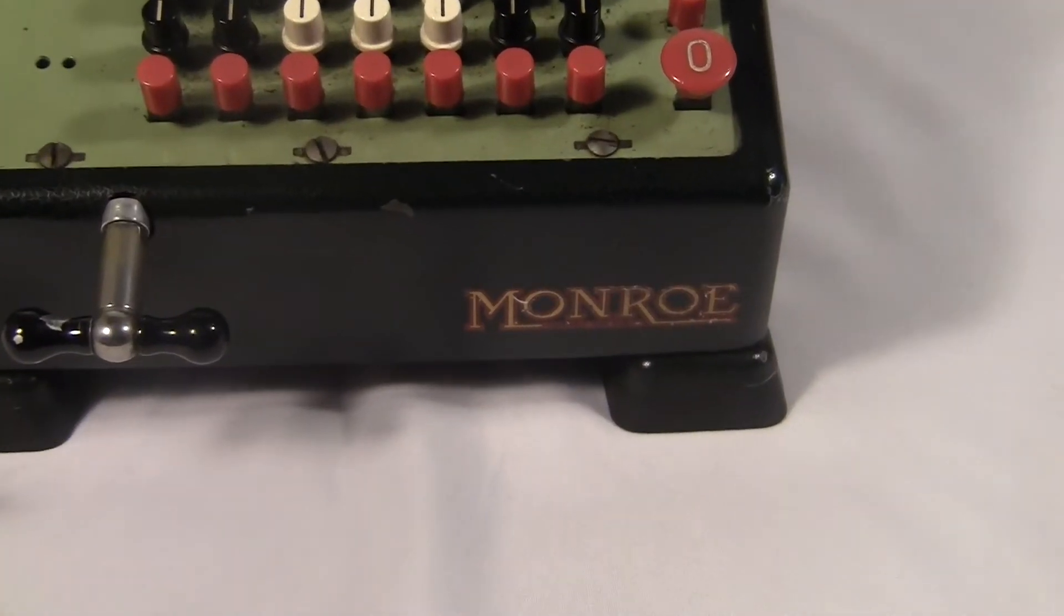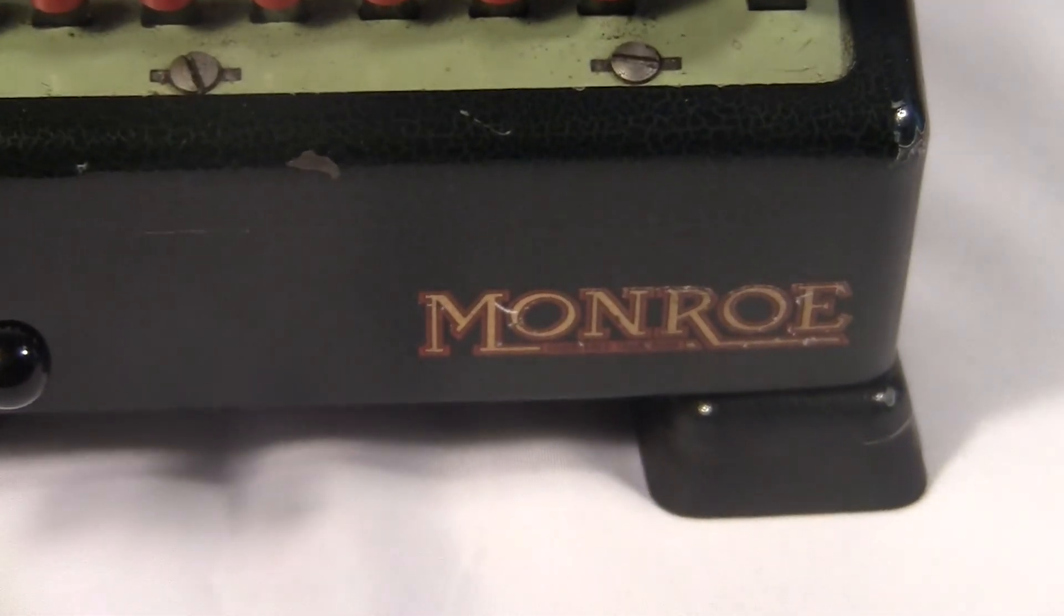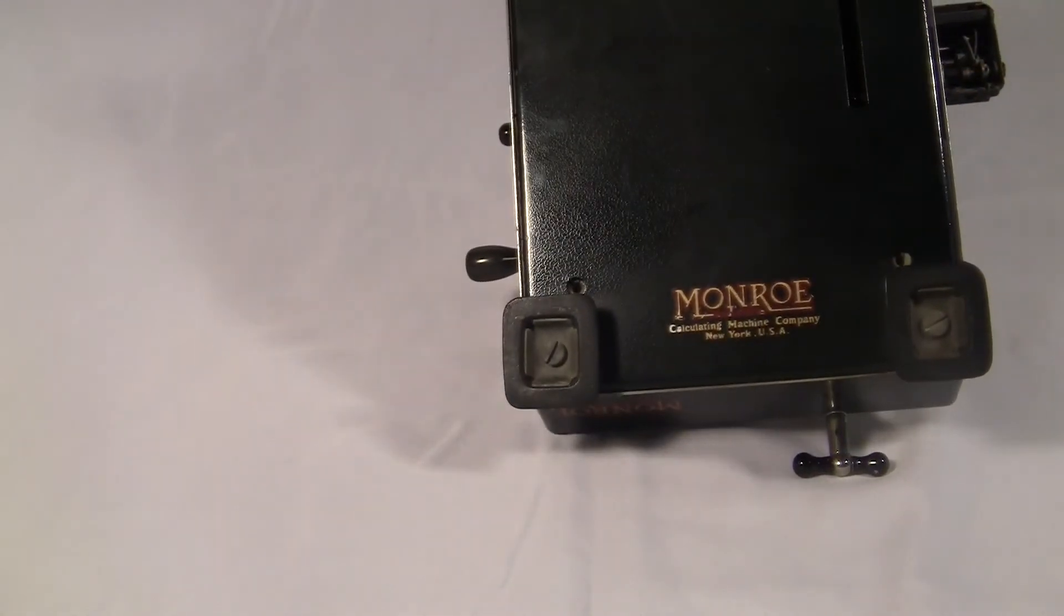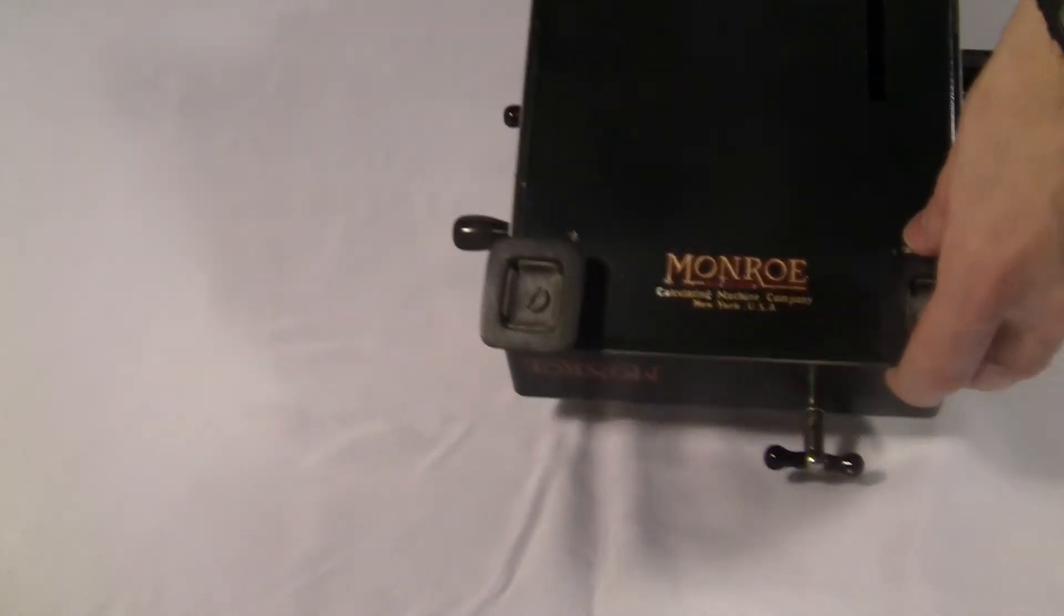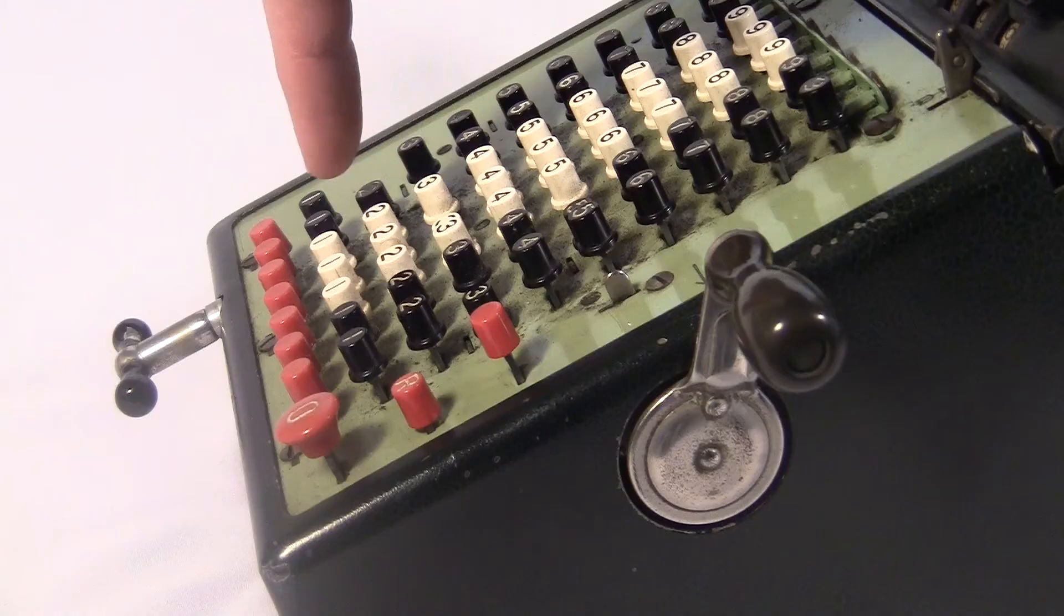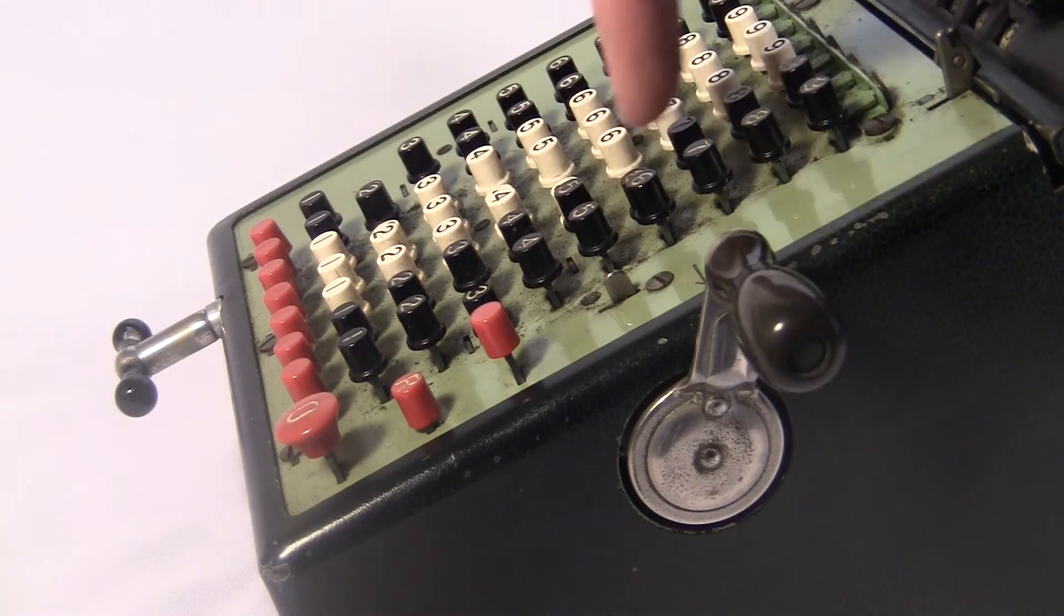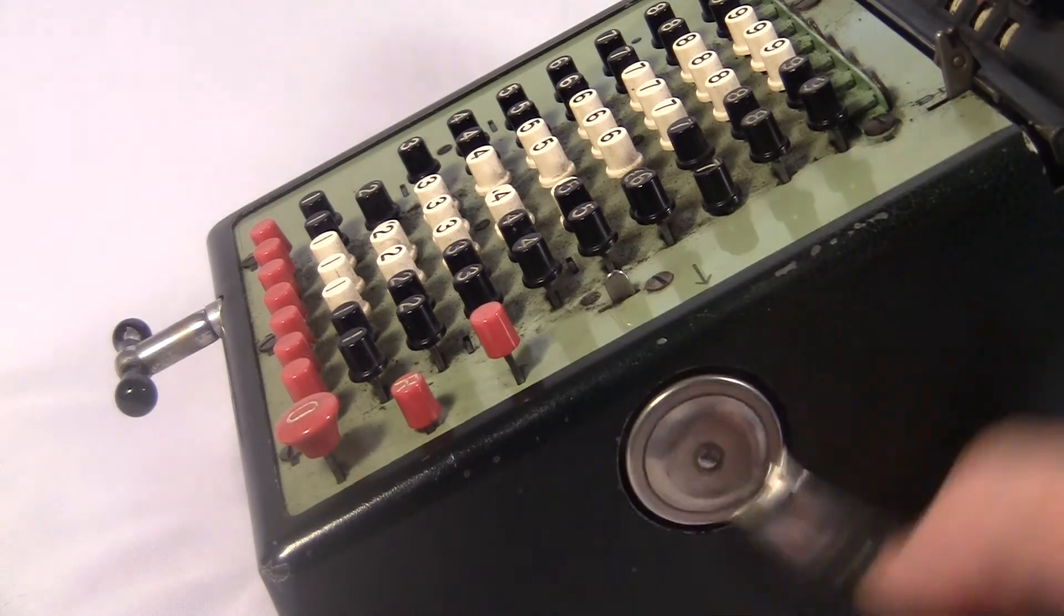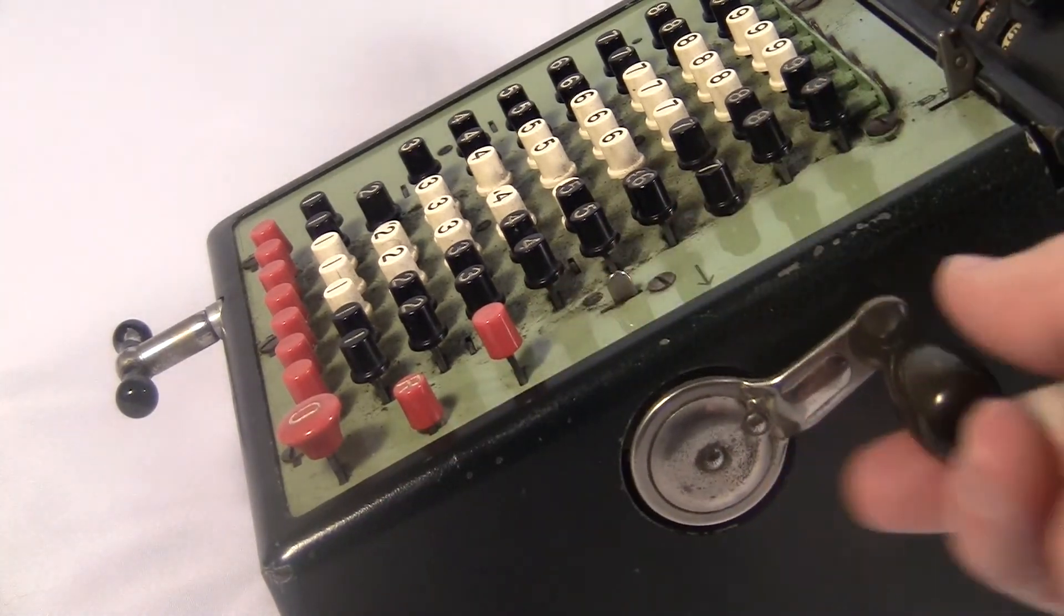This thing has the Monroe logo on it three times. One of them is on the bottom, where you'll never see it. I always appreciate nice design, even on places that you don't usually see. There's another smaller logo on the front facing the user. So while you're doing your multiplying and dividing, it's always in your mind. Monroe. This thing is a Monroe machine.